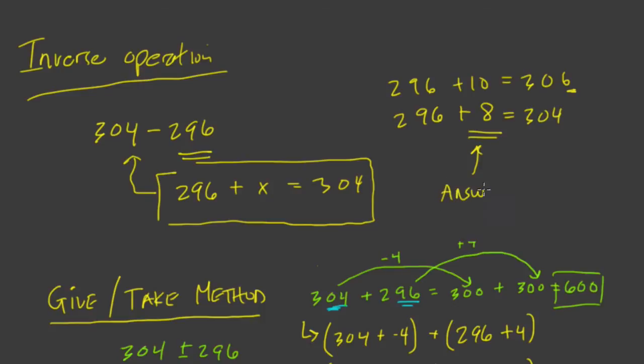And this is not easier on, I think, on pencil and paper, necessarily, or to write it down. However, mentally, if I said, if I asked you what is 304 minus 296, and you're thinking,